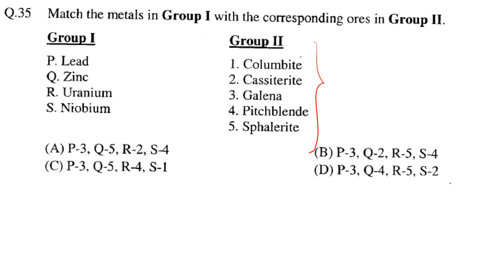First ore is columbite. The trick is that niobium was previously called columbium in older times, and from that the ore name columbite also comes. The formula is (Fe,Mn)(Nb,Ta)₂O₆.